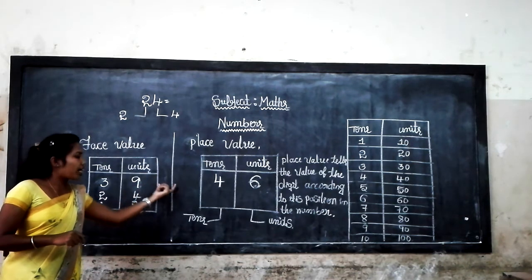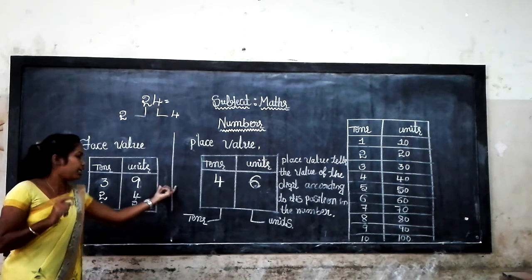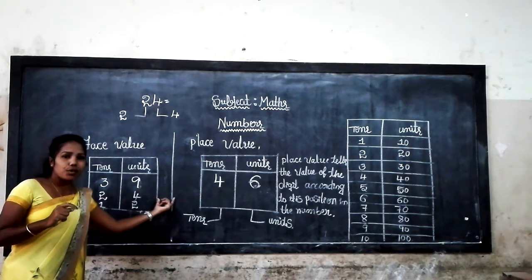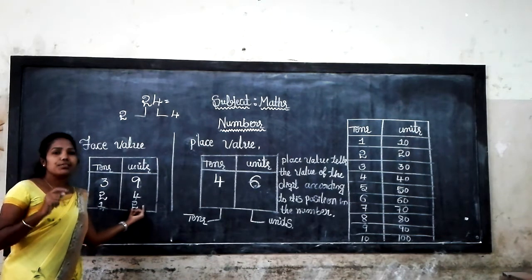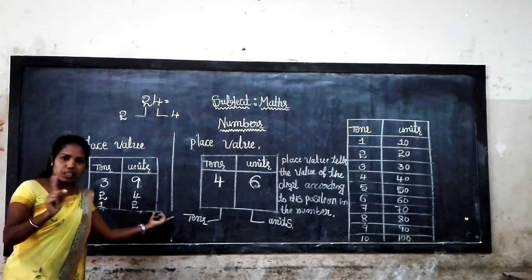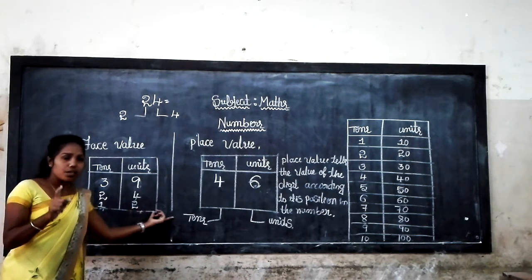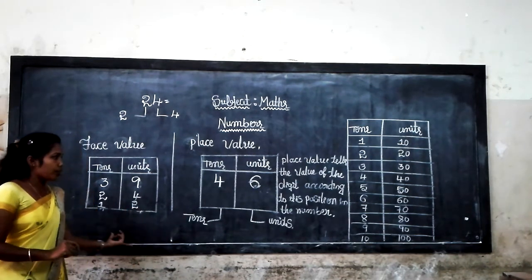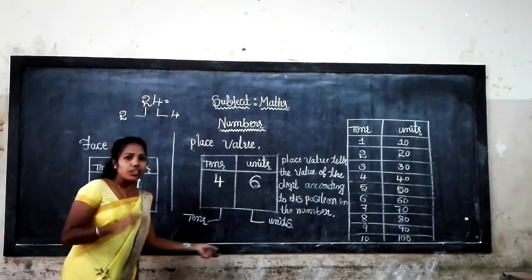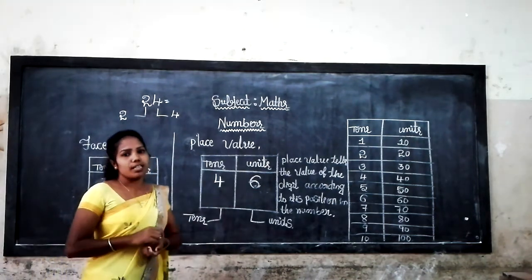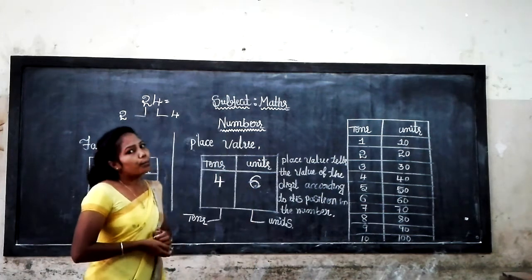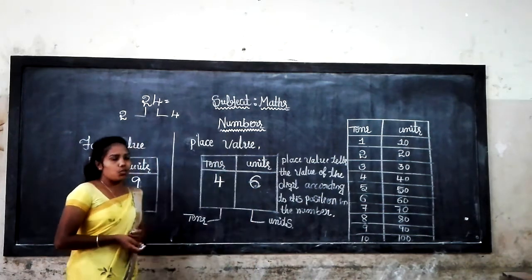In the units place, the place value is the same as the digit itself. The place value of 9 is 9, the place value of 4 is 4, and the place value of 2 is 2. There are no changes for digits in the units place.